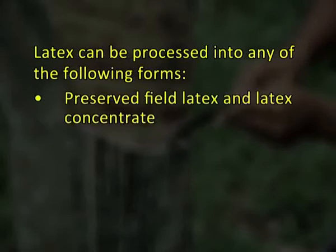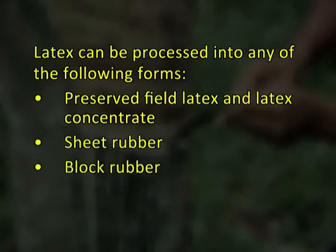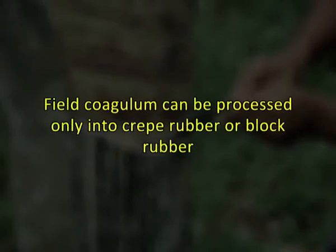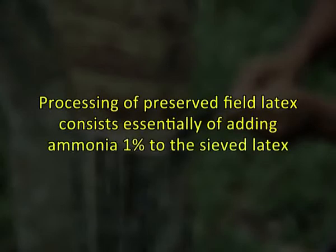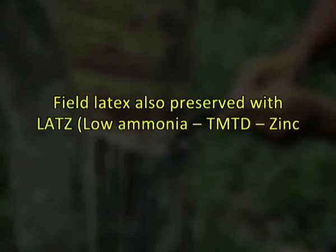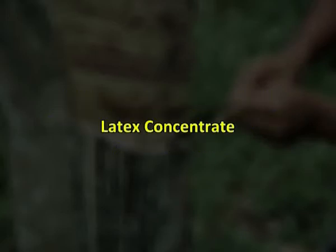Latex can be processed into several forms: preservative field latex, latex concentrate, sheet rubber, block rubber, and creep rubber. Field coagulum can be processed only into creep rubber or block rubber. Field latex is preserved using a suitable preservative for long-term storage, typically by adding ammonium at one percent concentration to the sieved latex. Field latex can also be preserved using the LATZ low-ammonium zinc oxide system. There is a good market for preserved latex concentrate as it is an important raw material with a wider range of applications.